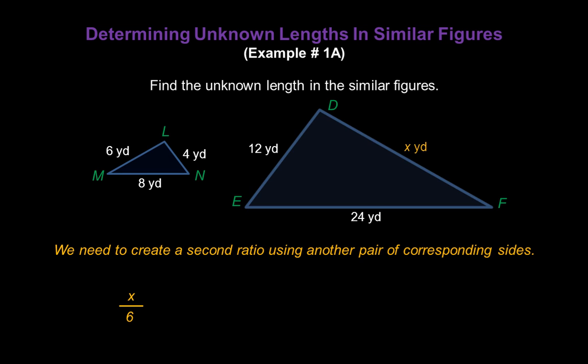Now we need to create a second ratio using another pair of corresponding sides. And we have two other corresponding sides in these figures. DE and LN are corresponding sides. And EF and MN are corresponding sides.